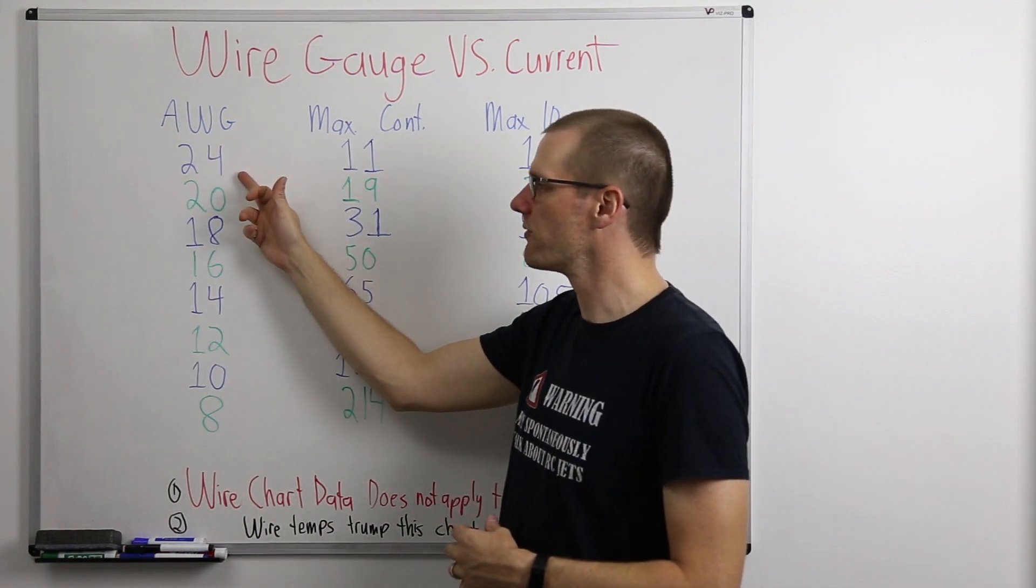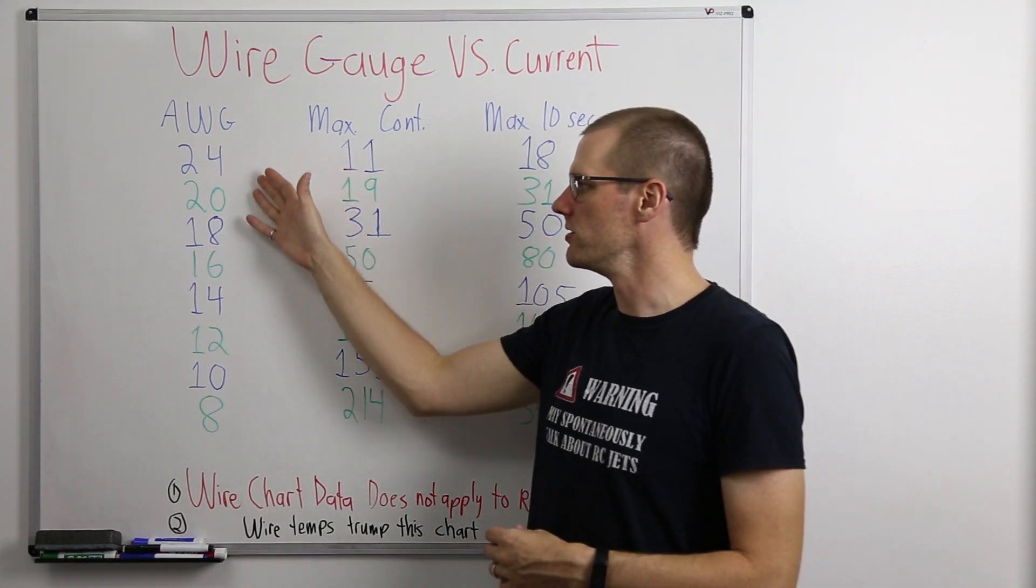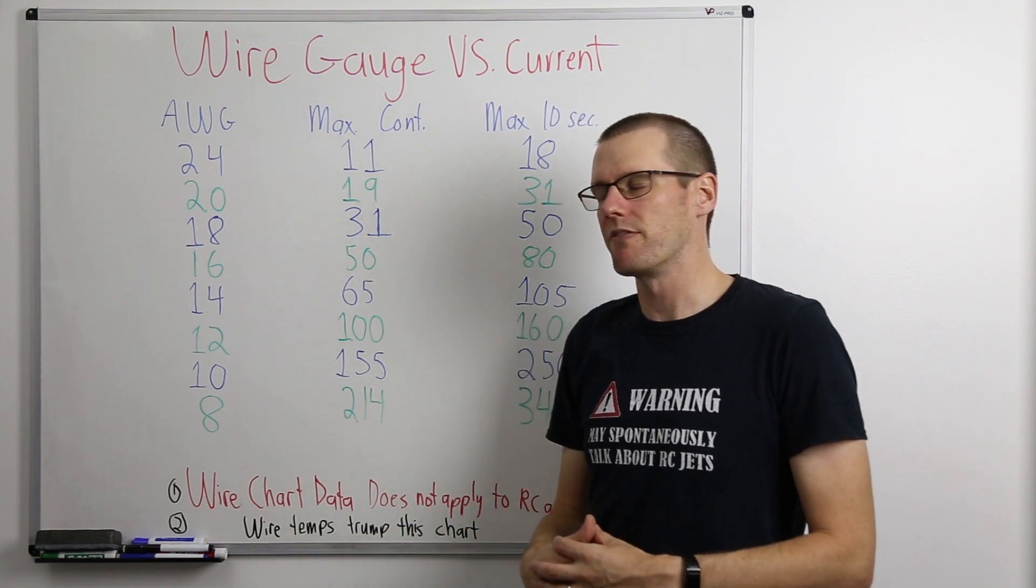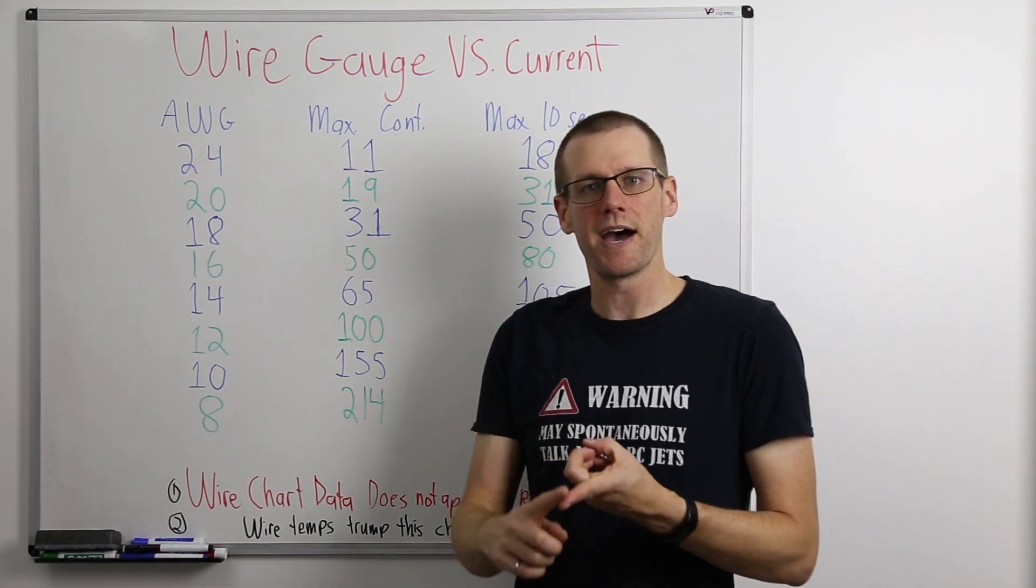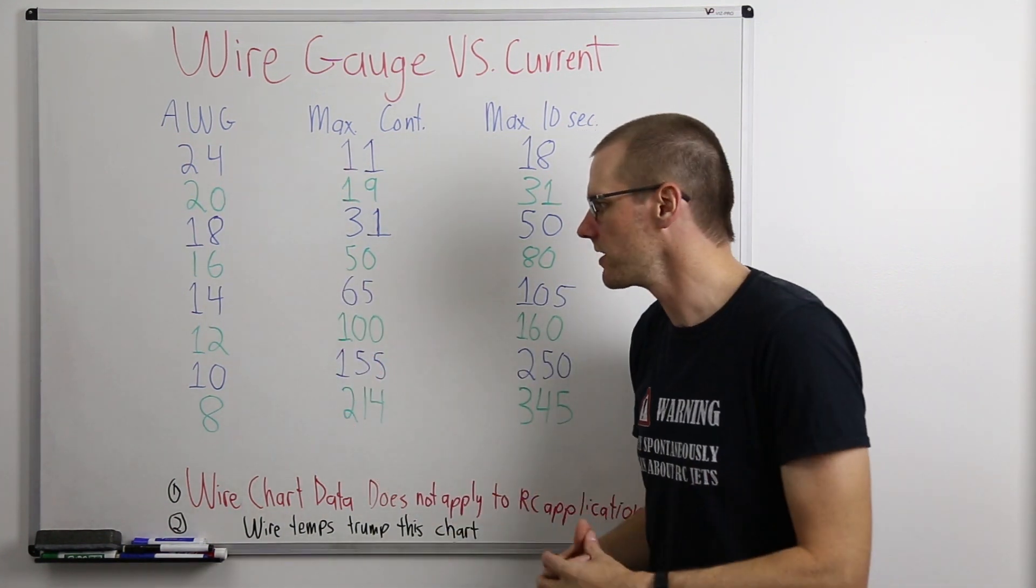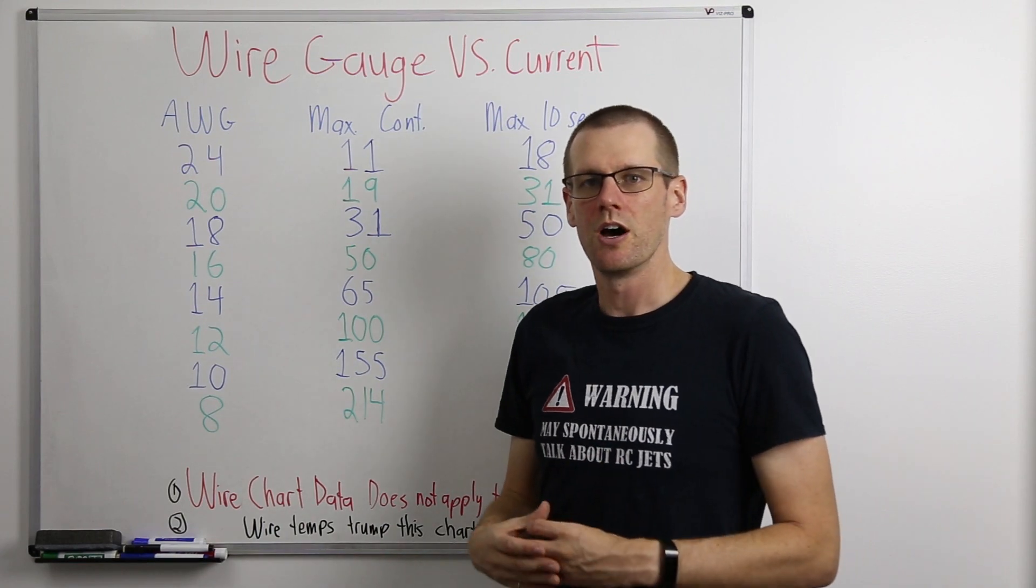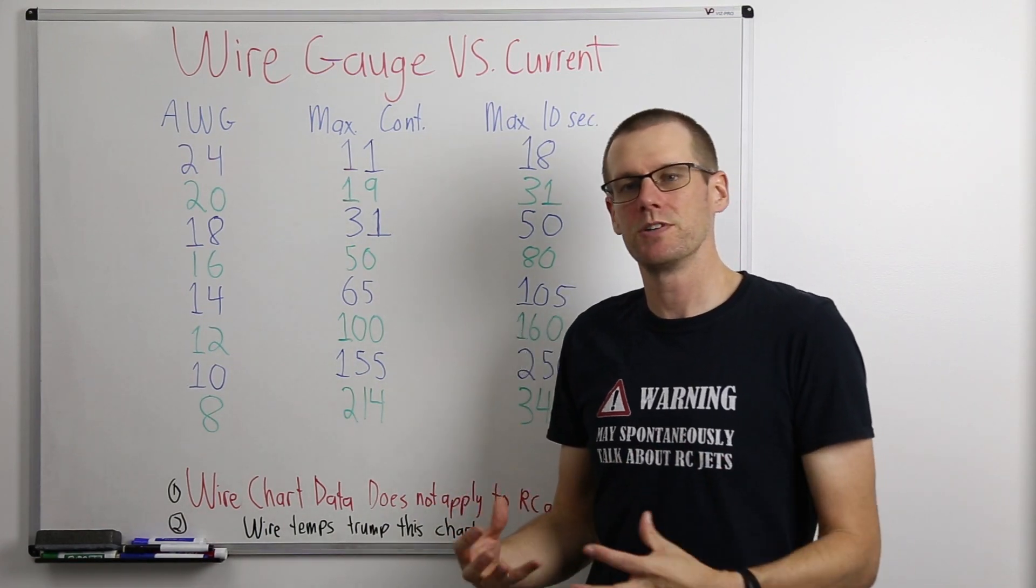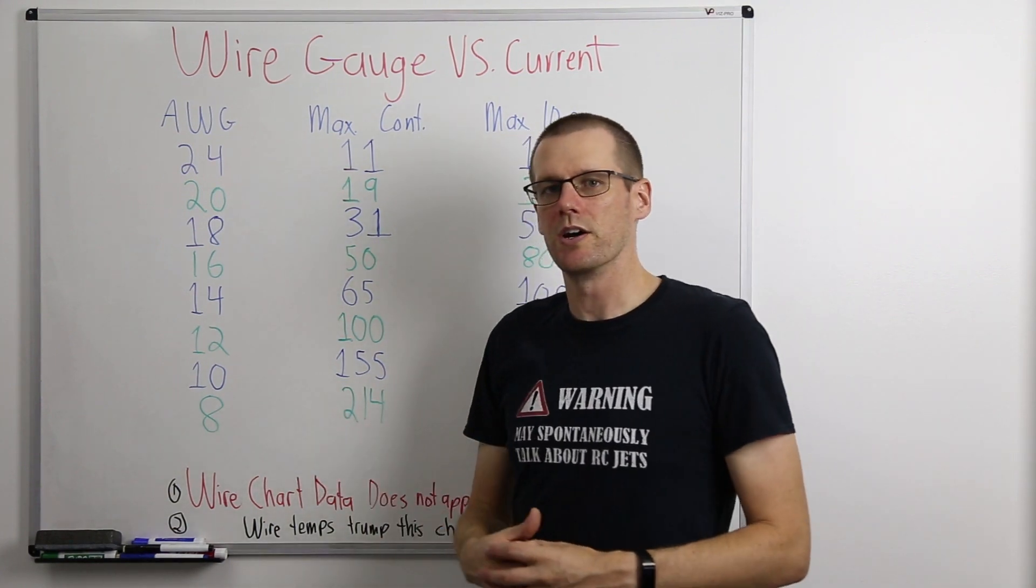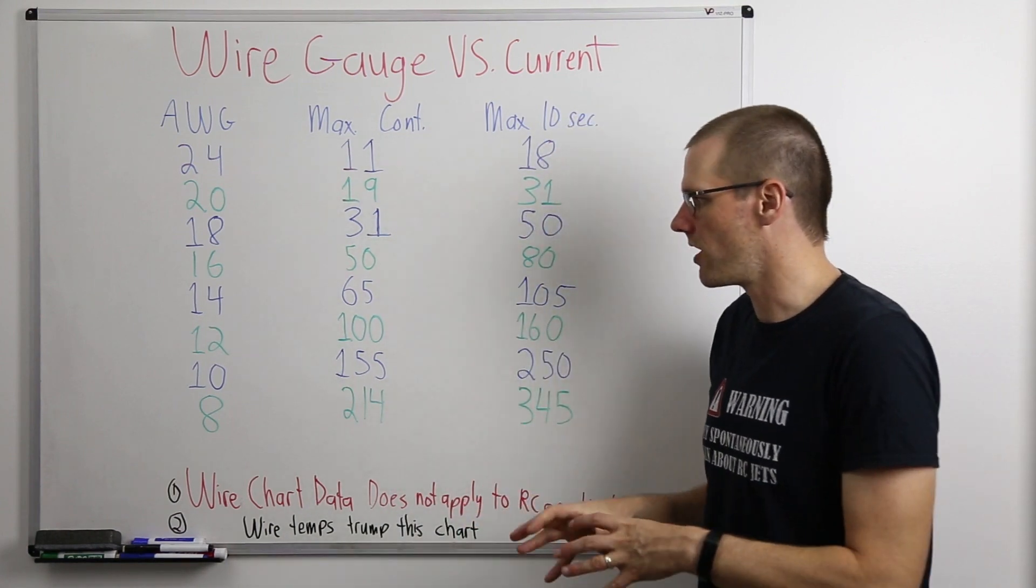We run from 24 gauge all the way down to number eight gauge. Now these are commonly used gauges of wire in many different parts of our electrical power system from the battery to the speed control and into the motor. Typically you would see a 24 gauge wire being used on something like a 10 amp speed control, whereas an eight gauge wire you'd see on something that is in excess of 200 amps more commonly.